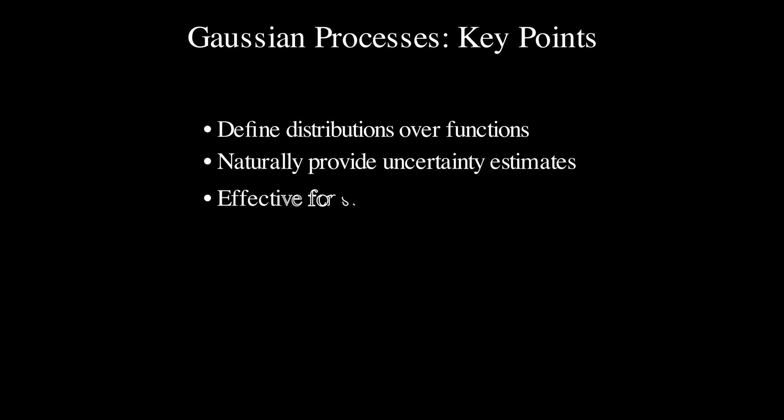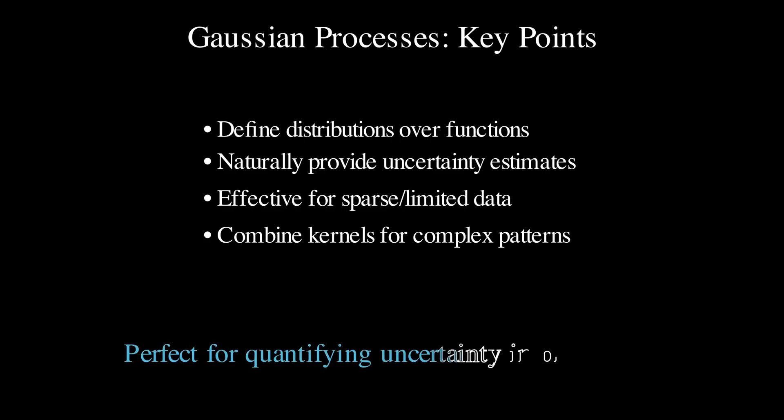To wrap things up, Gaussian processes are an incredibly flexible framework for modeling functions with uncertainty. They give us distributions over functions, not just point estimates. And they naturally provide uncertainty quantification, which is very effective for limited data. And by combining this algorithm with kernels, we can capture more complex patterns in our data. So the next time you are facing a regression problem with limited data, or need explicit uncertainty estimates, you should think about Gaussian processes.